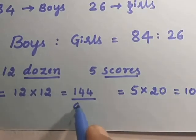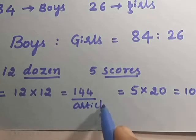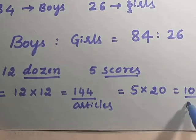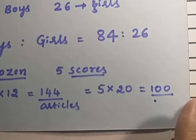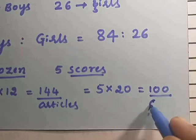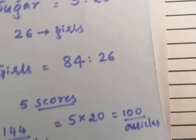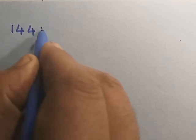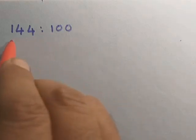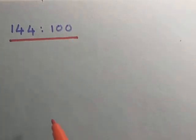Now 144 articles and 100 articles can be compared. That is, in this case, now the comparison is possible. That is 144 to 100. So this is how we write the comparison of the quantities.